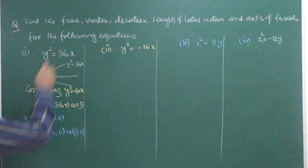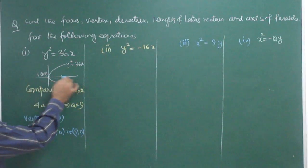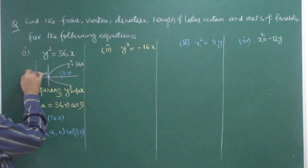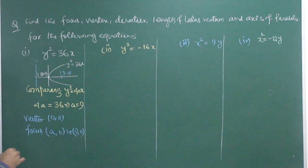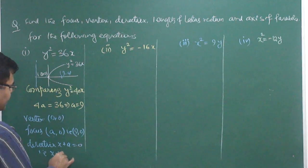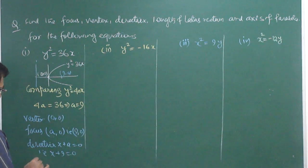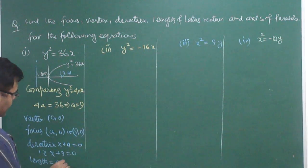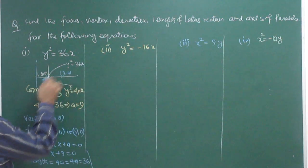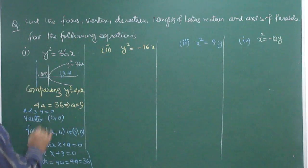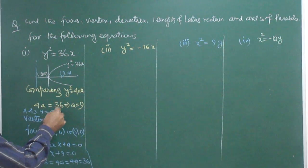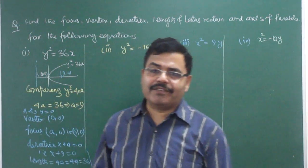Now, where is the directrix? The directrix is x + a = 0, that is x + 9 = 0. The length of latus rectum is 4a, so 4 × 9 = 36. As far as the axis is concerned, the axis is the x-axis, which has equation y = 0. So this completes one kind of parabola. If you remember the formula or understand the concept, you can answer all these questions.